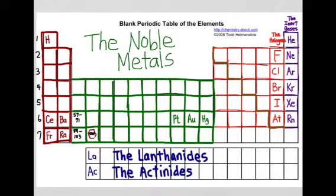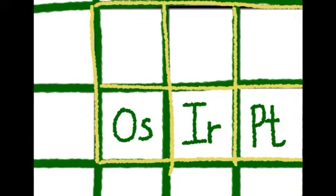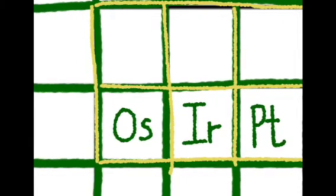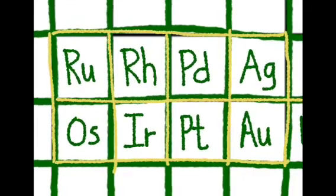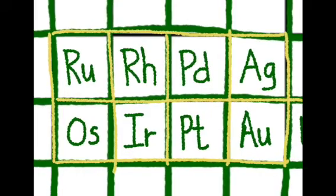Mercury is not a noble metal and the other ones live in row five. So the noble metals live in row five and row six: platinum and gold. The other two noble metals that are in row six are osmium and iridium. The ones that are in row five are ruthenium, rhodium, palladium, and silver.